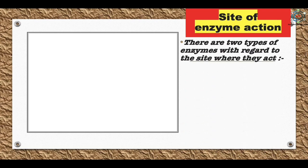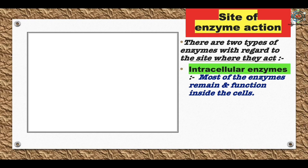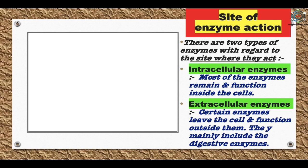Enzymes are obtained from microorganisms such as bacteria like Bacillus and fungi like Aspergillus. Regarding the site of enzyme action, there are two types. Intracellular enzymes remain and function inside the cells — some occur dissolved in the cytoplasmic matrix, and certain are bonded to particles like ribosomes, mitochondria, and chloroplasts. Extracellular enzymes leave the cell and function outside, mainly including digestive enzymes like salivary amylase, pancreatic lipase, and gastric pepsin, secreted by salivary glands, pancreas, and gastric glands respectively.